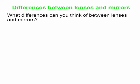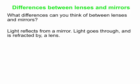What differences can you think of between lenses and mirrors? Here are some obvious ones. Light reflects from a mirror; on the other hand, light goes through and is refracted by a lens. So that's certainly a big one.